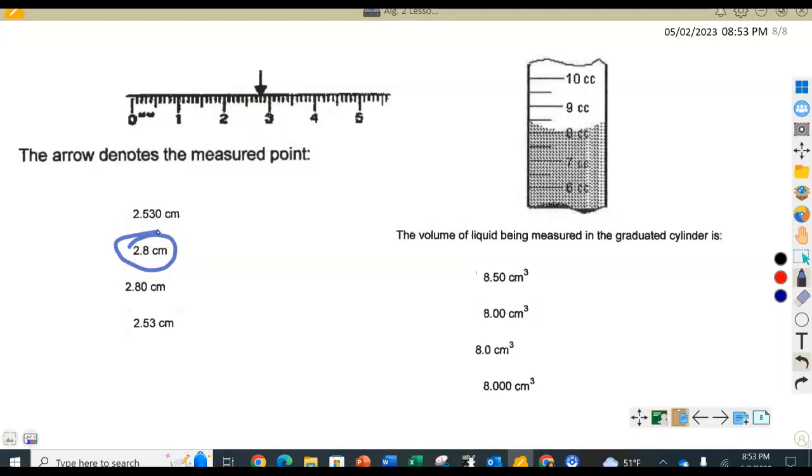All right, so even though this is 2.8 and this is 2.80, we know that 2.8 is the correct answer because it doesn't have increments in between each one. So the 0.8 represents the millimeters. We know this is in millimeters, but 0.80 would have to be even smaller than the millimeters there. And we don't have anything smaller here in measurement to measure that.